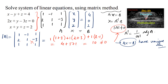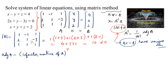Now let's find the adjoint of matrix A. The adjoint of a matrix is the transpose of the cofactor matrix. Let's find the cofactor matrix using the shortcut method.